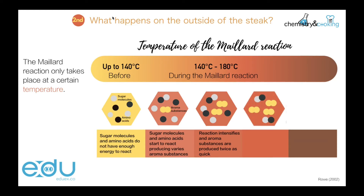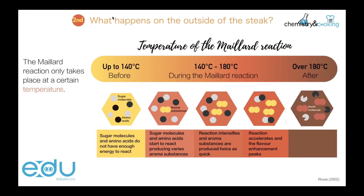Going higher in temperature, from 160 to 180 degrees Celsius, even more aroma substances are produced and flavor enhancement is at its peak. However, going beyond 180 degrees means the Maillard reaction no longer occurs. Instead, acrid molecules are produced that cause a bitter taste. The sugar and amino acids break down, leading to the steak blackening and developing a burnt smell.